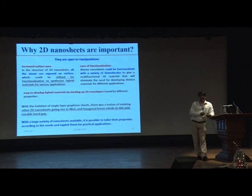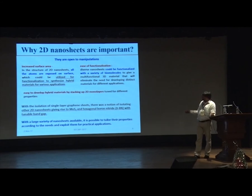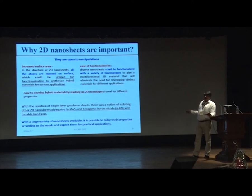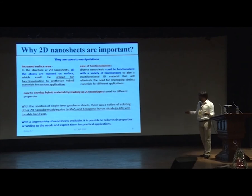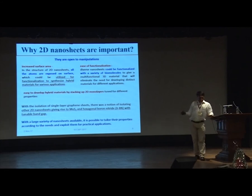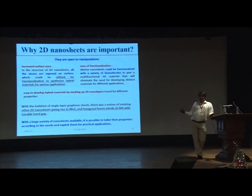As Professor G.P. Das mentioned in the morning, there are now all sorts of 2D materials. Among these, important ones include boron nitride nanosheets, MoS2, and transition metal dichalcogenides, with hexagonal boron nitride having a tunable band gap. With a large variety of available nanosheets, it is possible to tailor their interaction and properties according to need, and exploit them for practical applications such as designing biosensors and bio-detectors.